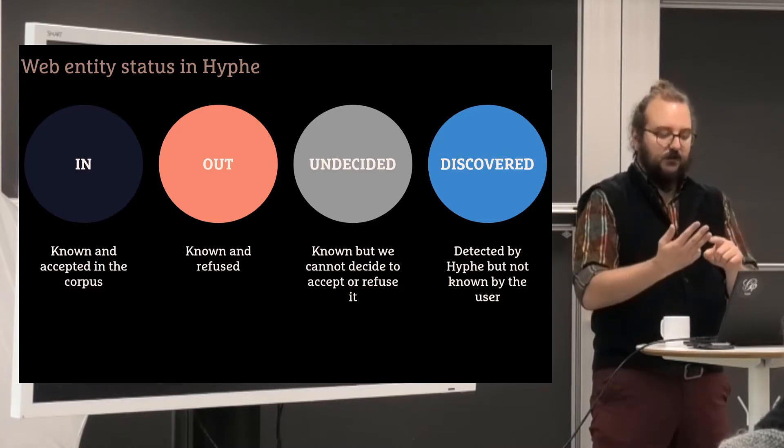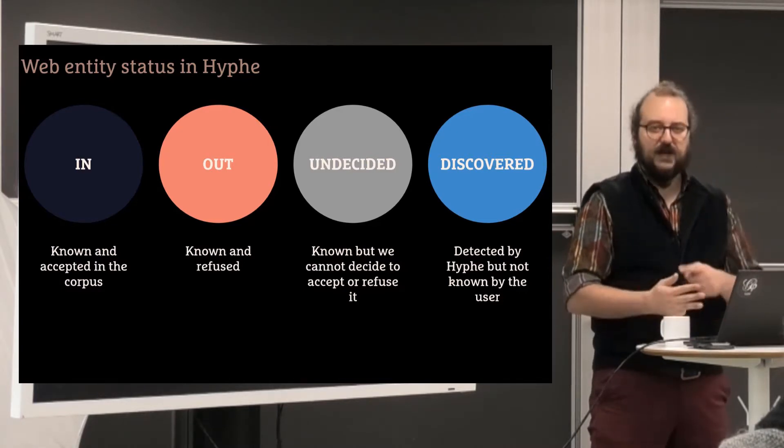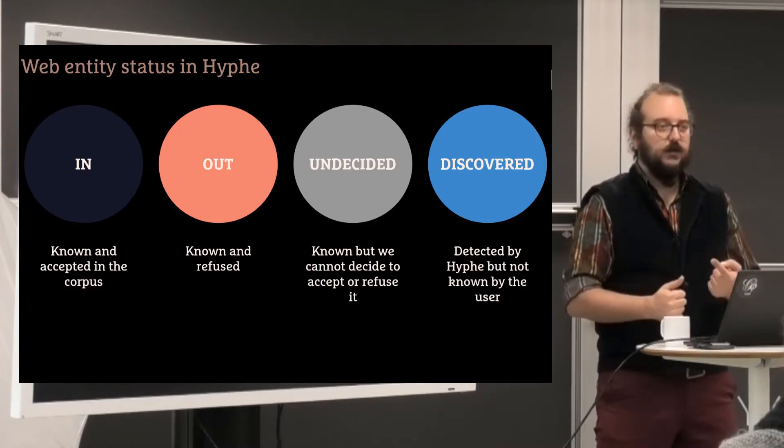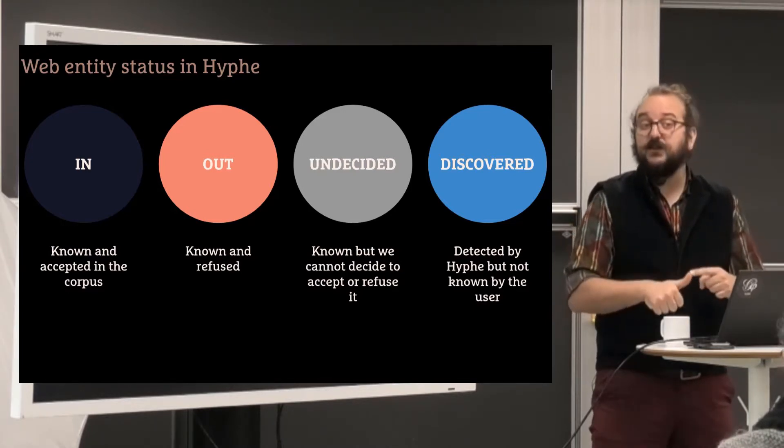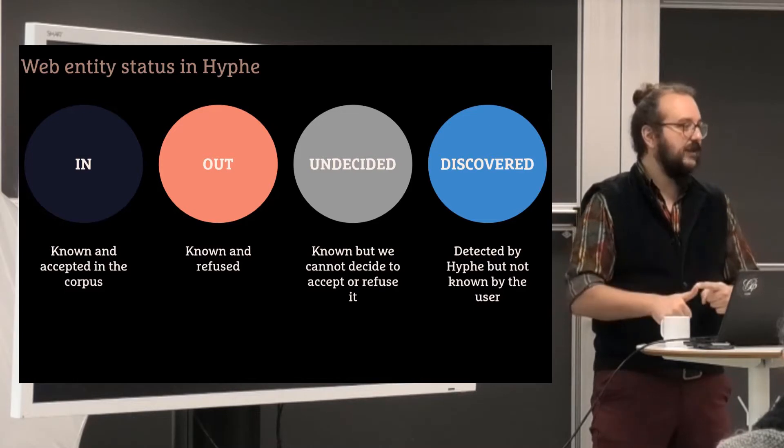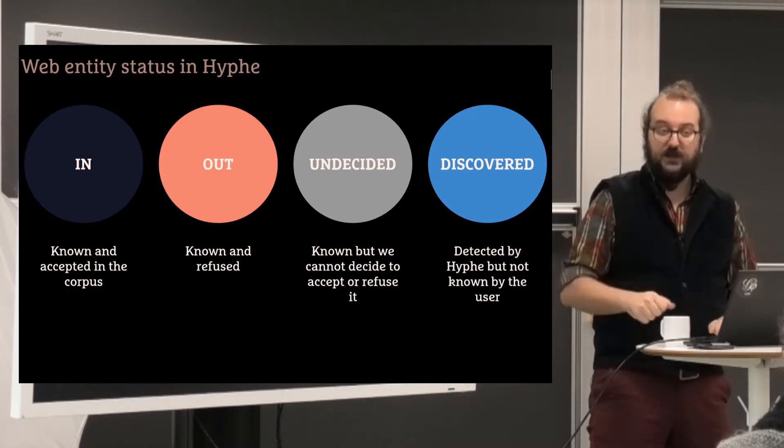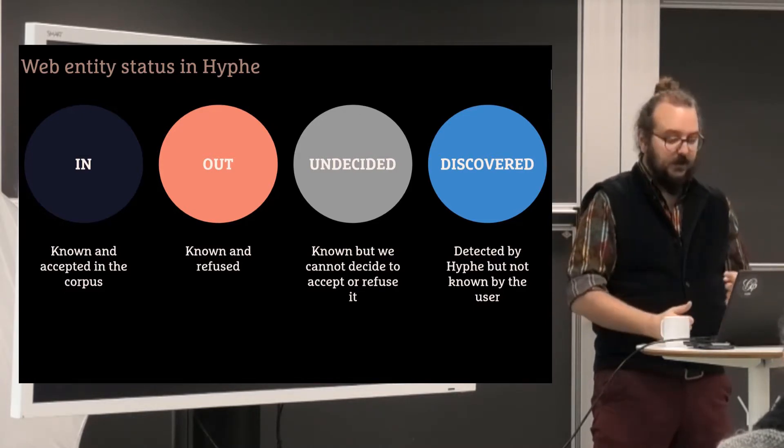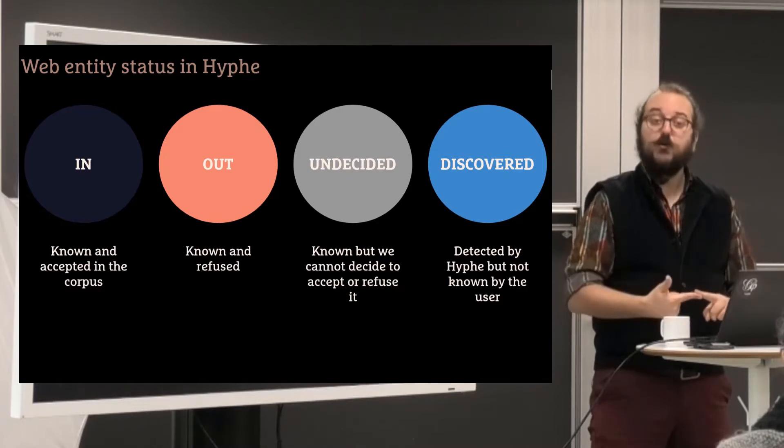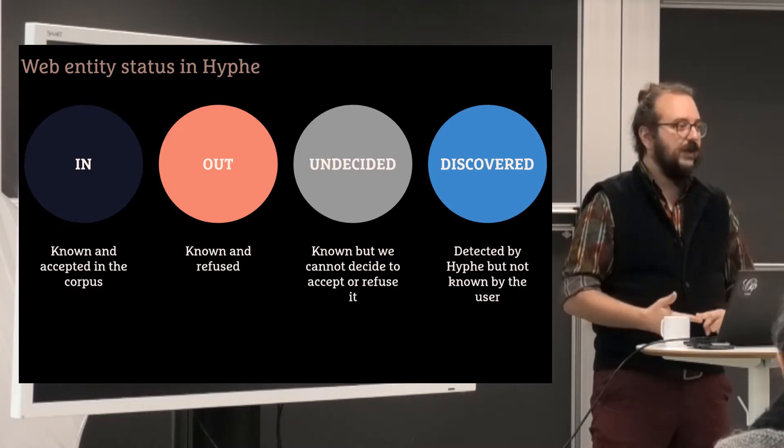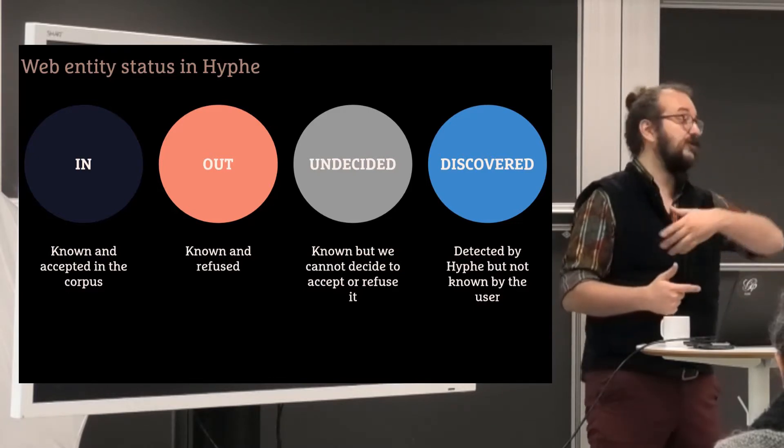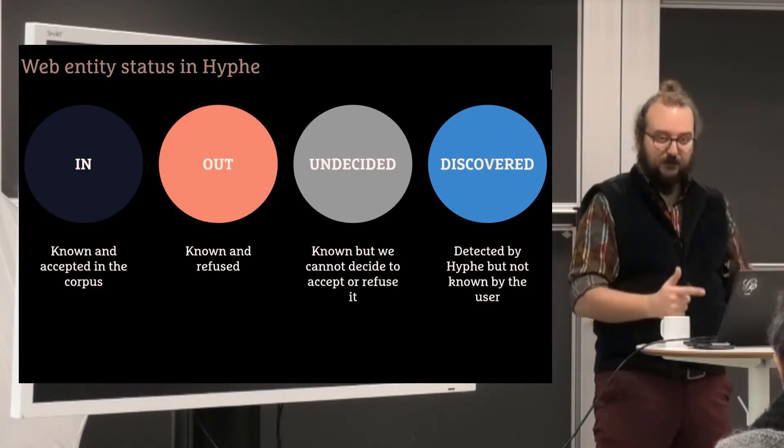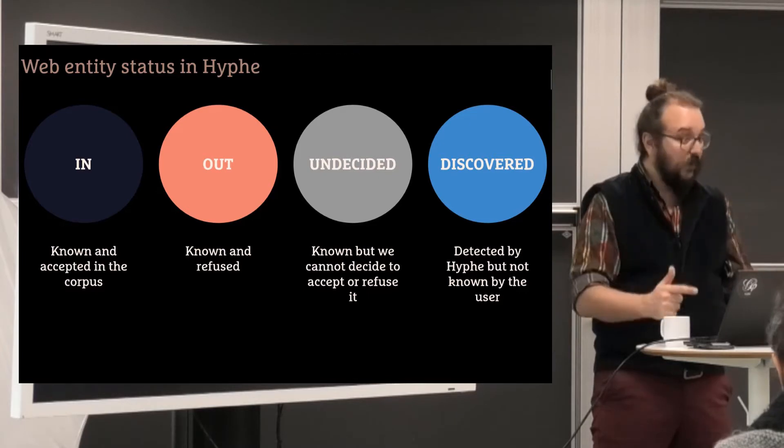The websites known by Hyphe are of four different kinds. Your corpus itself is the IN, so it means you've put the web entity inside your corpus. It's your basket. The OUT is web entities you know that you don't want, and we remember we don't want them because we will find them again and again. We have to remember that we know them and we know we don't want them.